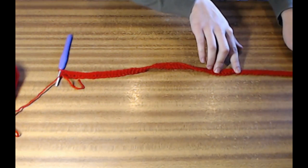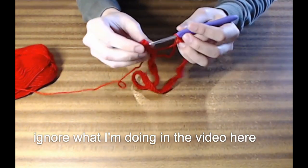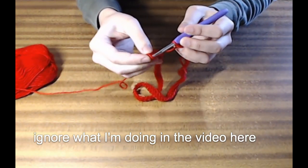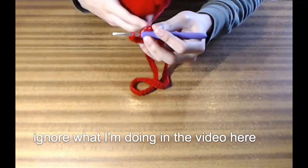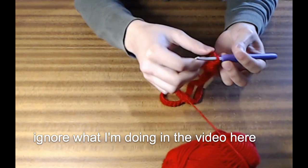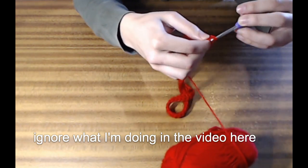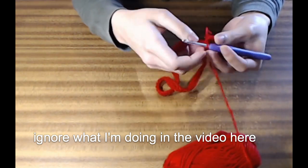You should still have one loop on the hook, so to do the join, you can put the hook through both holes on either side of the strip. Then yarn over and pull through both. And now you have two loops on the hook, so yarn over and pull through like you're doing a single crochet.